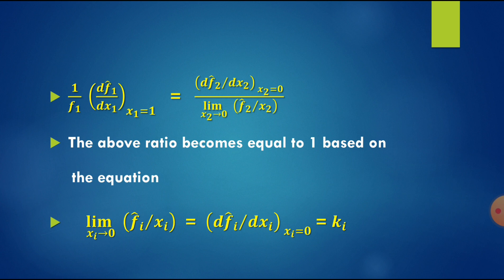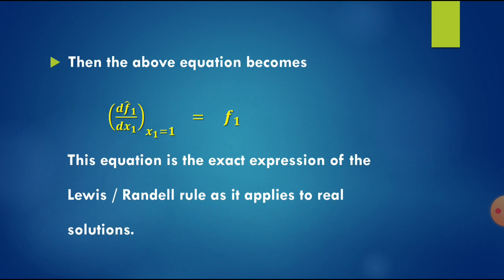From this we can say the ratio limit x_i→0 of F_i cap / x_i equals dF_i cap/dx_i at x_i=0, which is a constant. This ratio equals 1, meaning dF_2 cap/dx_2 at x_2=0 divided by limit x_2→0 of F_2 cap/x_2 equals 1. Substituting gives dF_1 cap/dx_1 at x_1=1 equals F_1. This equation is the exact expression of the Lewis-Randall Rule as it applies to real solutions.